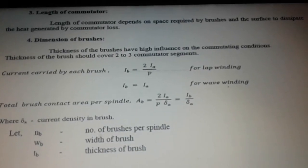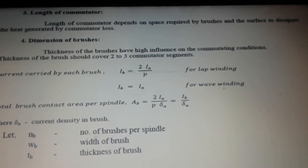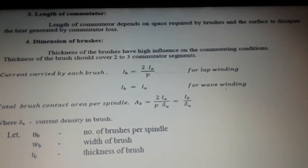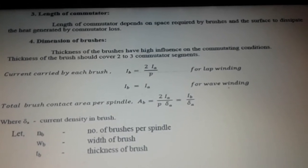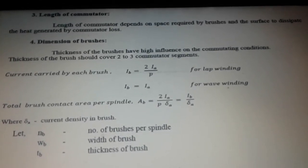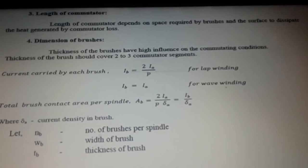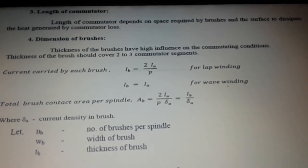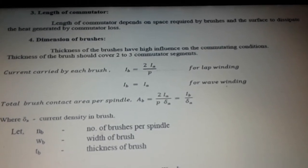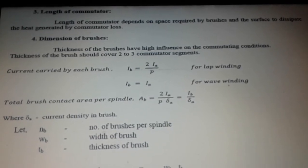Length of commutator depends on the space required for brushes and the surface to dissipate the heat generated by commutator loss. Dimension of brushes: The thickness of the brushes have high influence on the commutating conditions. Thickness of the brush should cover 2 to 3 commutator segments.